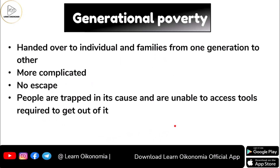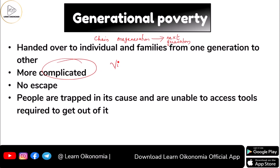The first type is generational poverty. Generational poverty is carried forward from one generation to the next generation — it appears like a chain, handed over to individuals or families across generations. That's why we call it something very complicated; it acts like a vicious chain that is toxic.